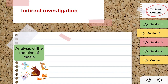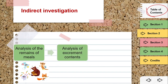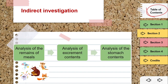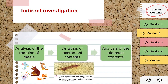He will see what the animal ate and what remained from the meal. Another method is the analysis of excrement contents — the excrement contents means the waste of an animal. The scientist will examine the waste and from it determine what the animal ate.